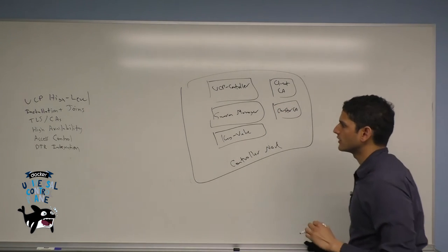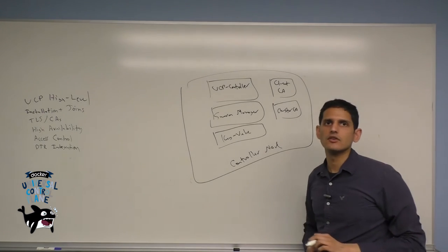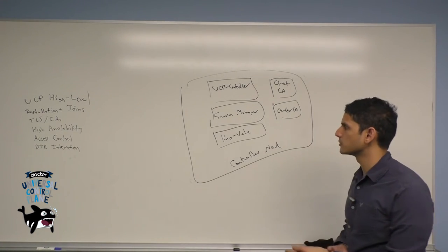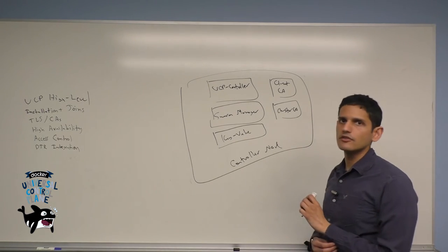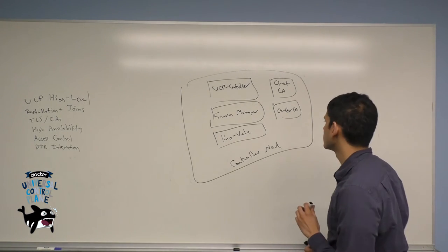Now under normal circumstances, if this node went down, all of your information about the UCP deployment, your user accounts, your cluster settings, your certificate authority, those would all disappear and you might be in trouble for your deployment.